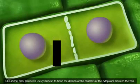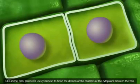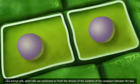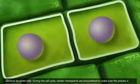Like animal cells, plant cells use cytokinesis to finish the division of the contents of the cytoplasm between the two identical daughter cells.